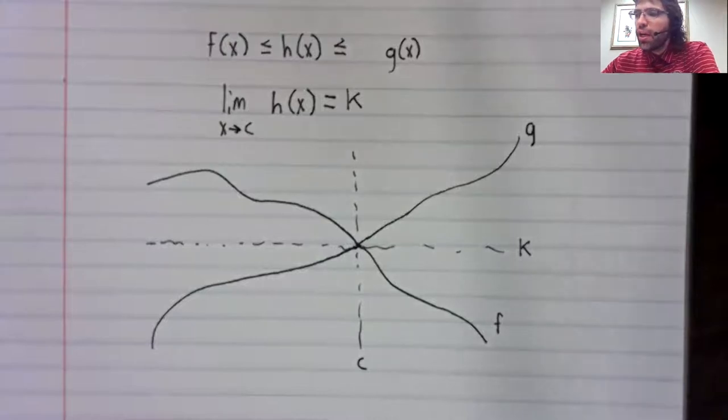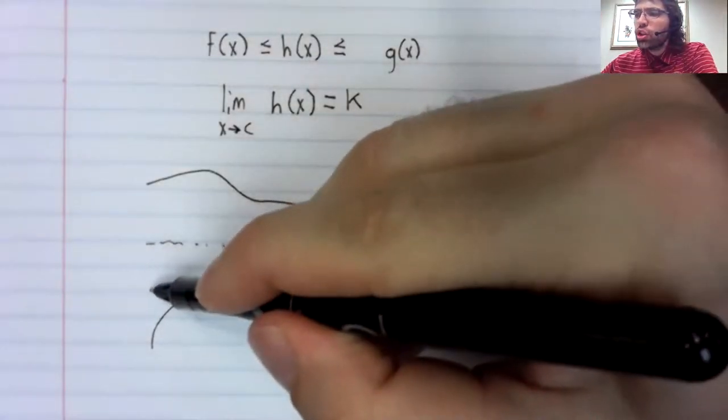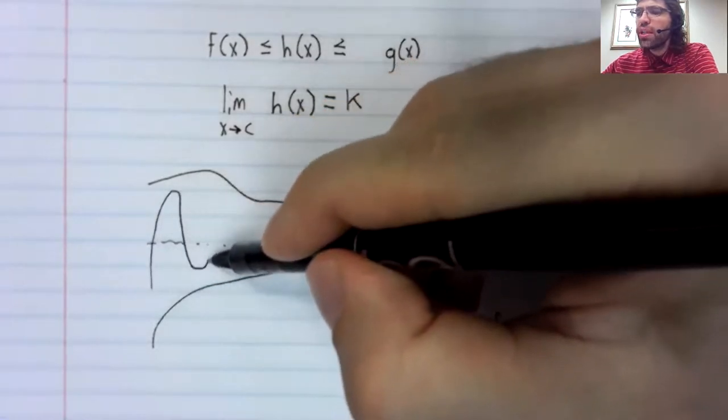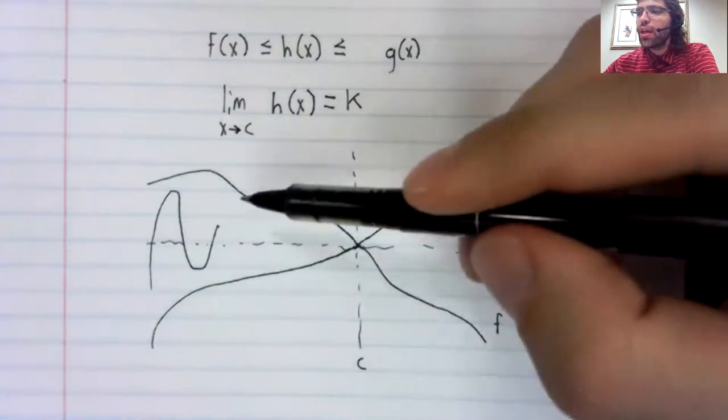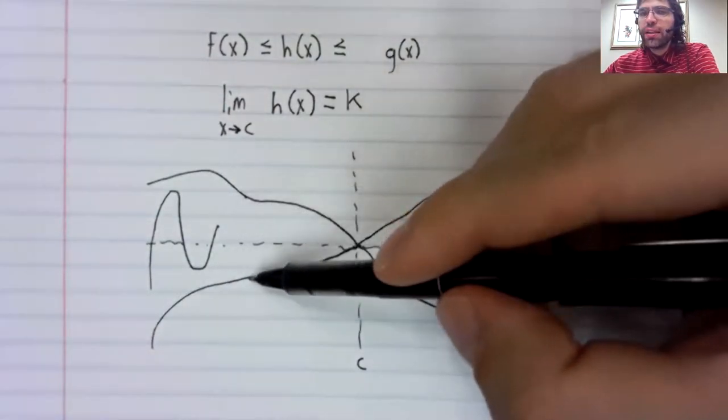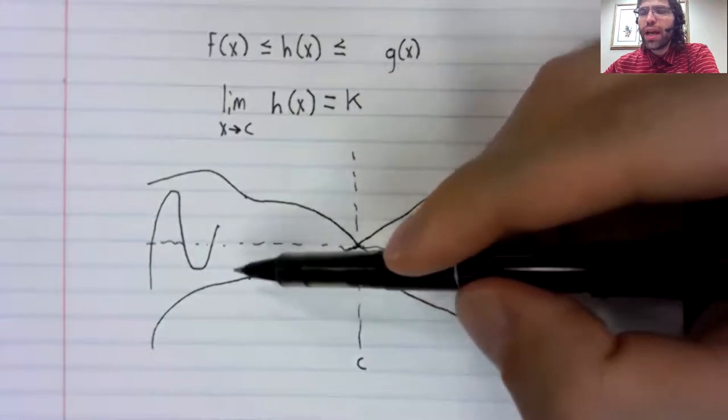And now you have this function H that's squeezed between them. It can't get above this and it can't get below that.